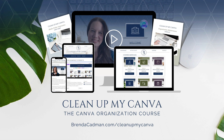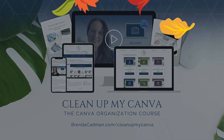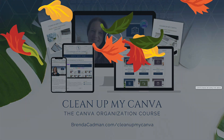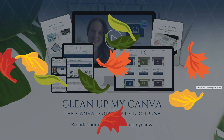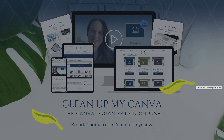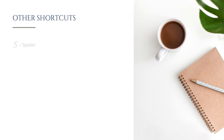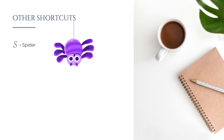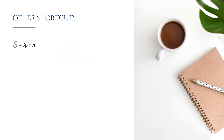You can press F to create a gentle falling leaves effect, another Thanksgiving-inspired animation. Available during Halloween, pressing S will summon a spooky spider animation, as my friend Dara found out the hard way. Also available during Halloween, G will bring up a ghost on your slide.